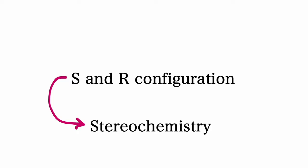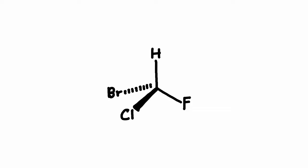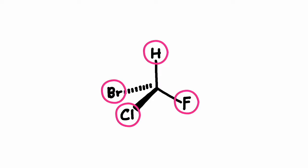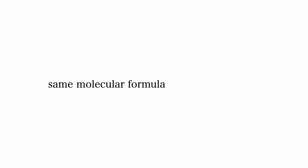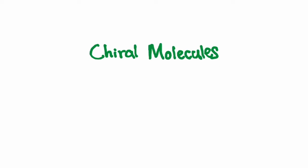S and R configurations are a key concept in stereochemistry. Stereochemistry is a branch of chemistry that focuses on the 3D arrangement of atoms within molecules. It also considers the spatial relationship between different chemical groups within molecules. Stereoisomers are part of stereochemistry — they are molecules with the same molecular formula and connectivity of atoms but differ in their 3D arrangements.